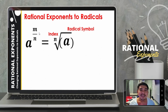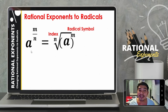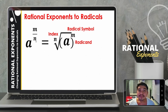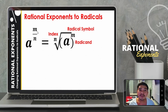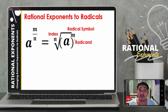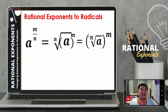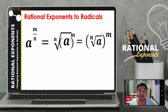To convert, first write the radical symbol, then place the base inside the radical symbol. The denominator of the fractional exponent goes outside the radical symbol and is called the index. The numerator of the fractional exponent goes inside along with the base as its exponent. This is called the radical, and it is read as the n-th root of a raised to m.